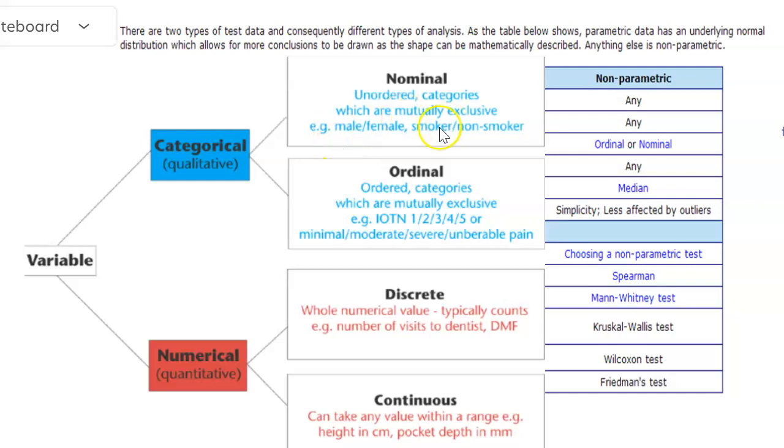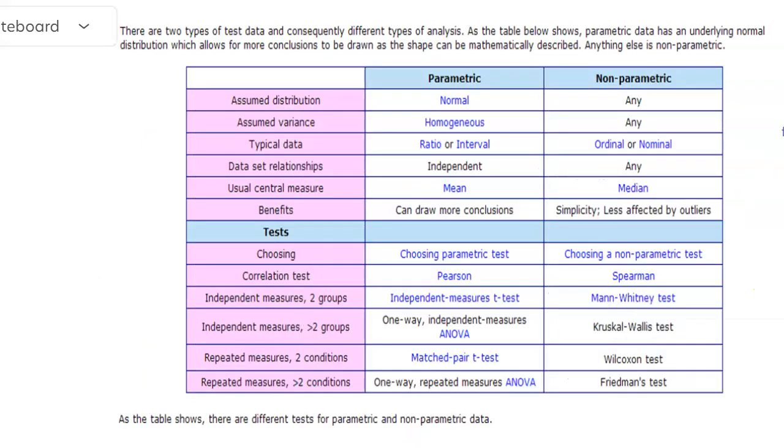We're just stating male, female. We're just stating smoker, non-smoker. We're not saying that one is better than the other. Whereas in the ordinal, here we are saying that if you're in minimal pain, that's better than if you're in severe or unbearable pain. If I asked you what degree of difficulty your client has, is your client a DD1, a DD2, a DD3, or a DD4, that's also ordinal because you're ordering the categories. Someone who has a DD4 client will go through a lot more challenges in debriding that client than perhaps someone who is a DD1.